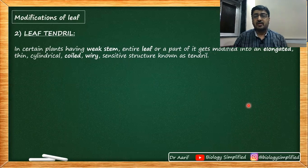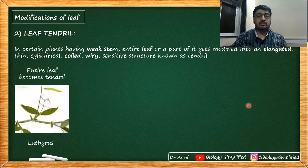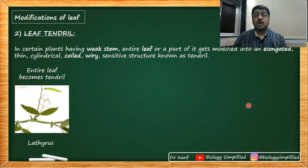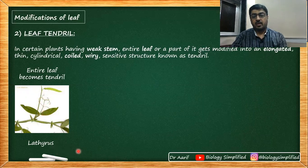Let's see some instances where the leaf modifies into a tendril. First: the entire leaf becomes a tendril. Example — Lathyrus, the wild pea. Pisum sativum is the garden pea or sweet pea. In Lathyrus, the entire leaf has become a tendril, but there are leaf-like structures called phyllodes that do photosynthesis.